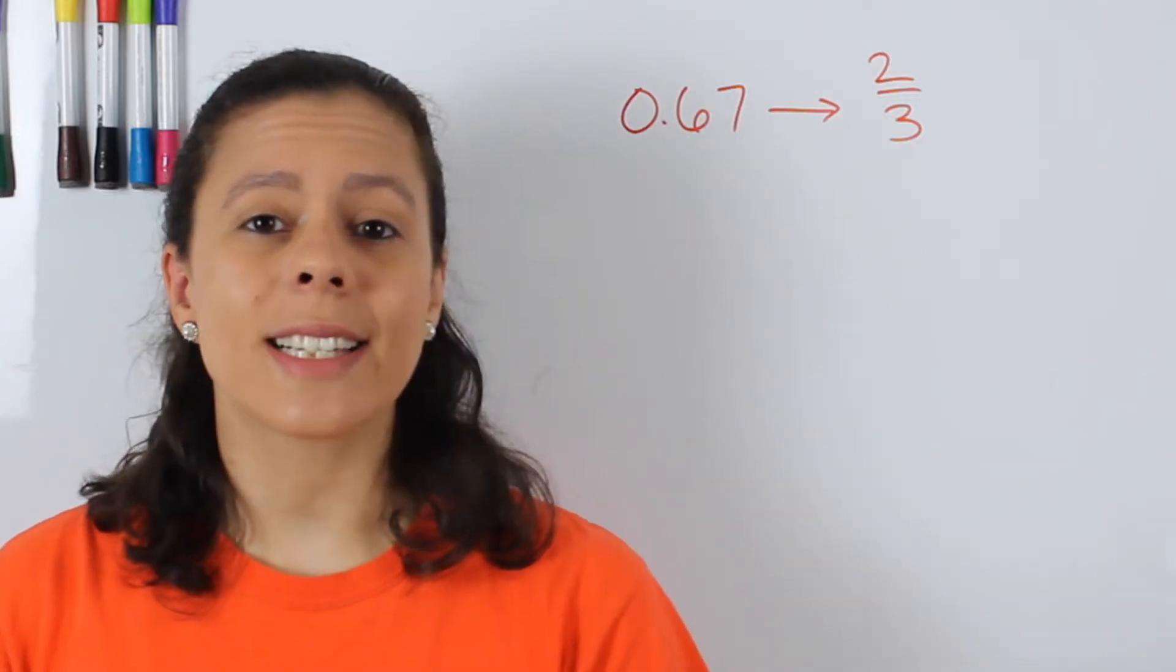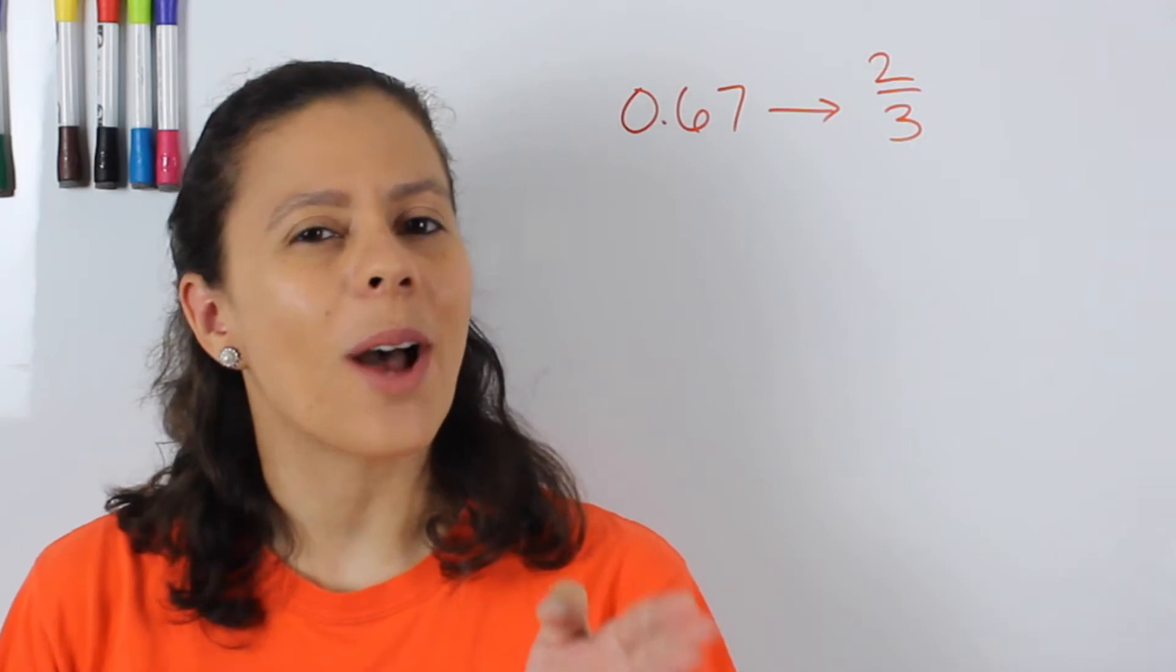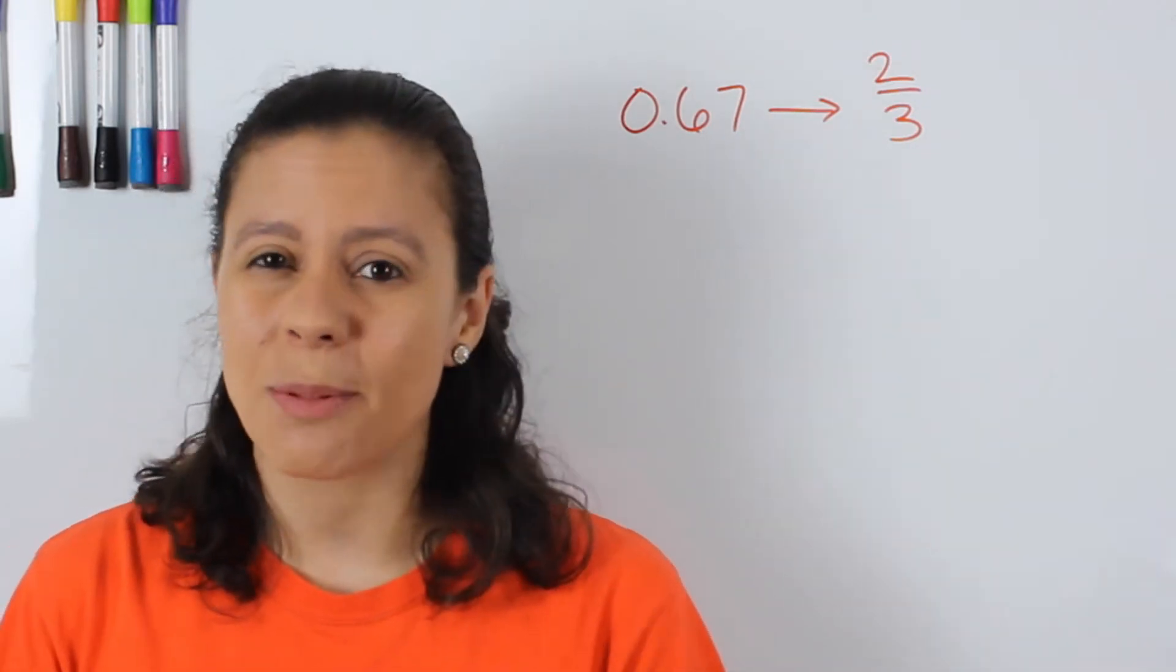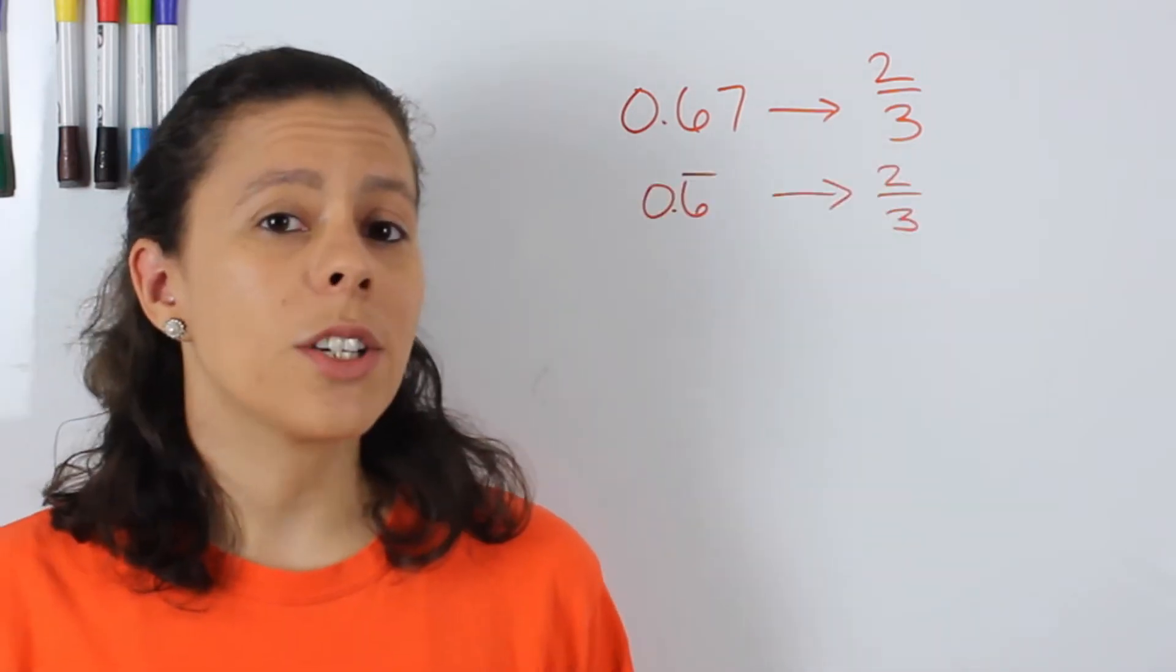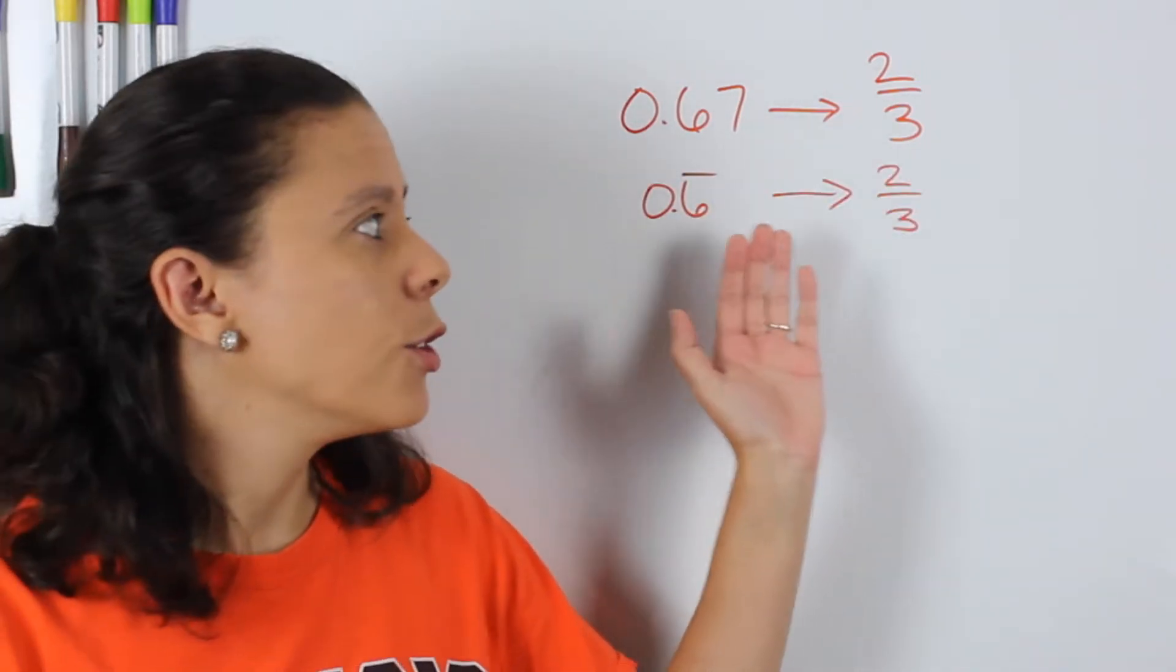Now the good news is that 0.67 is actually 0.66 repeating rounded up. That's why I actually don't recommend you guys round up unless it's absolutely necessary. Now the question is how do I go from 0.6 repeating to 2 thirds?